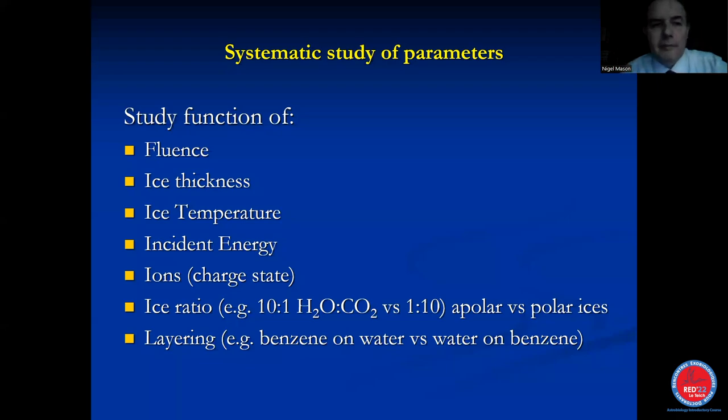So we have an experimental program in astrochemistry developing in Europe and wider, where we're trying to study these icy grain surfaces and look at these properties. But we're adopting a process of what we call systems chemistry to do that. And we want to look at all the different parameters: fluence, ice thickness, ice temperature, incident energy, charged state of the ions, ratio of the ices.